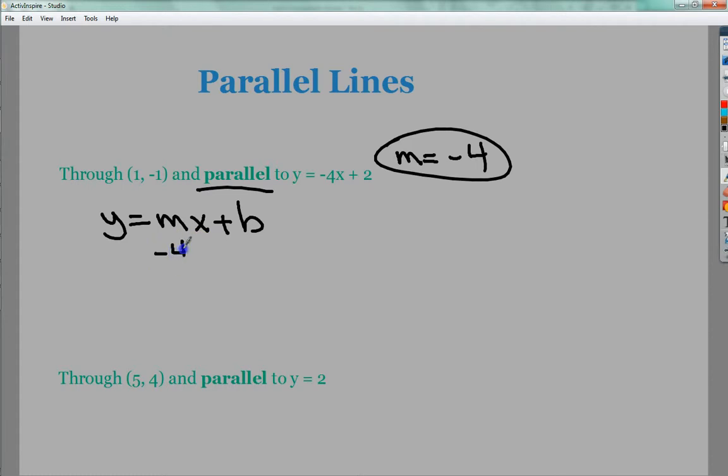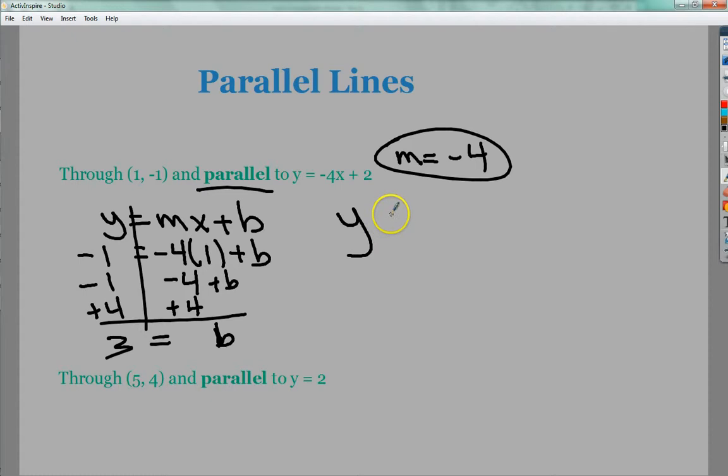My slope is just -4. My x value is 1. My y value is -1. And I'm going to solve for b. I did -4 here. I need to remove -4, so I need to add 4 to both sides. My b value is a positive 3. So my final answer is a line that goes through (1, -1) and is parallel to -4x + 2 is y = -4x + 3.